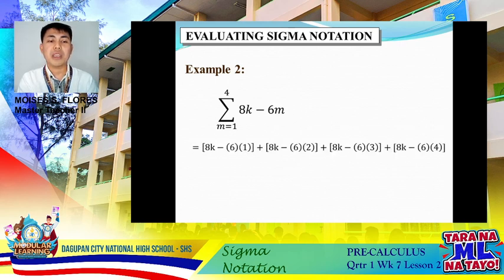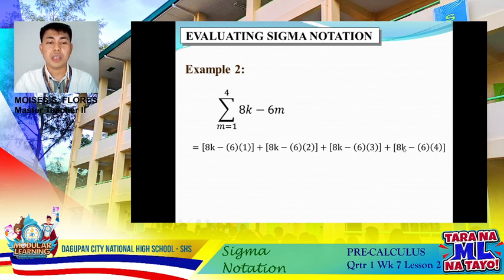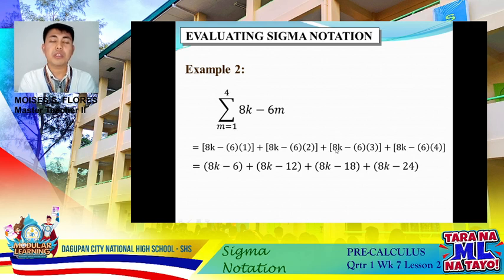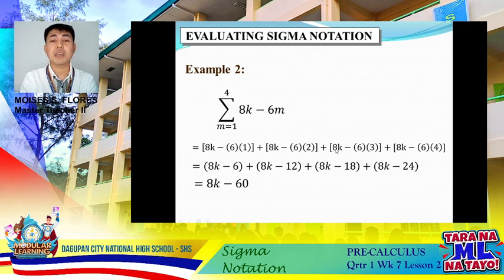So we have 8k minus 6, and m is substituted with 1, 2, 3, and 4. Simplifying further: 8k minus 6, plus 8k minus 12, plus 8k minus 18, plus 8k minus 24. Combining constants, we simply copy 8k, giving us 8k minus 60. So the summation of 8k minus 6m as m goes from 1 to 4 is simply 8k minus 60.